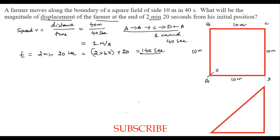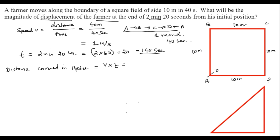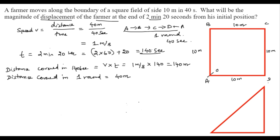Now let us calculate the total distance covered in 140 seconds. Distance = velocity × time = 1 m/s × 140 s = 140 meters. This is equation one. Distance covered in one round = 10 + 10 + 10 + 10 = 40 meters. This is equation two.